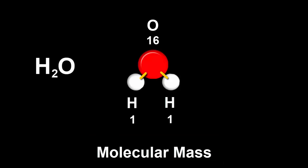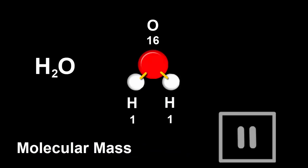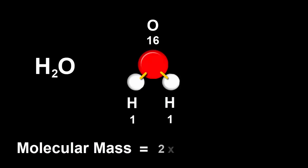What's the molecular mass of water, H2O? It contains two hydrogen atoms, each with an atomic mass of 1, and one oxygen atom with an atomic mass of 16. So add them together, and its molecular mass comes to 18.